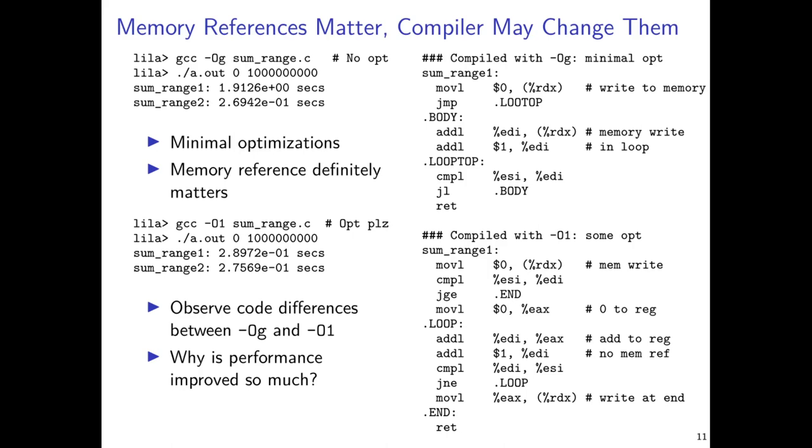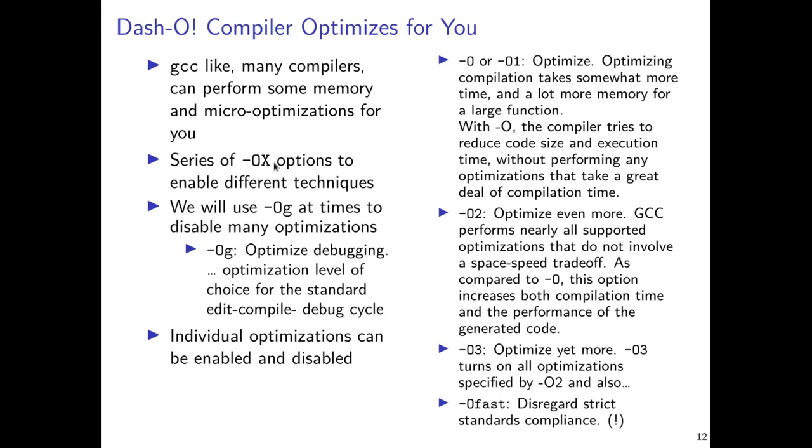And we saw that with very minimal debug or very minimal optimizations, this debug level optimizations, hitting main memory in that sum range one did take considerably more time on a large number of iterations versus the sum range two, which used probably a register variable. But by cranking up the optimization level just a little bit in the compiler, we get essentially identical performance between these two. And that's because the compiler will devote efforts to transforming this source code at optimization level one by applying various little tweaks to it on your behalf.